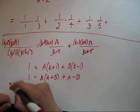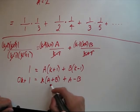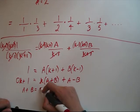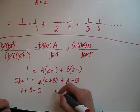Now we set the left side and right side's coefficients equal to each other. So this left side has an invisible 0k, so we have that a plus b equals 0. And then our constant, we have a 1 equals a minus b.